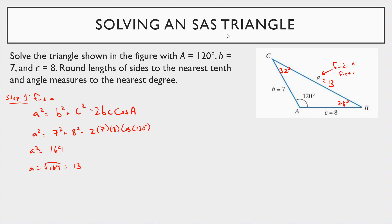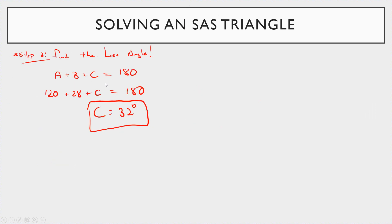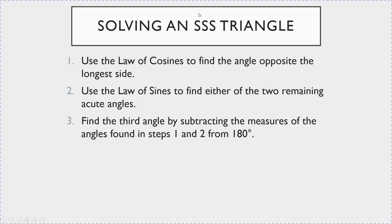Now let's talk about the side-side-side case. The steps are the same basic concepts: three steps — law of cosines first, then law of sines, then a simple subtraction for the last angle. For SSS, you use the law of cosines to find the angle opposite the longest side. Then use the law of sines to find either remaining acute angle, and subtract to find the third.